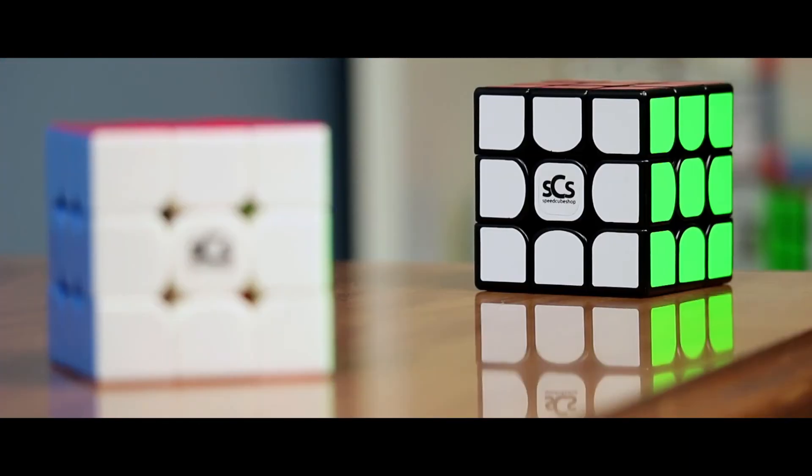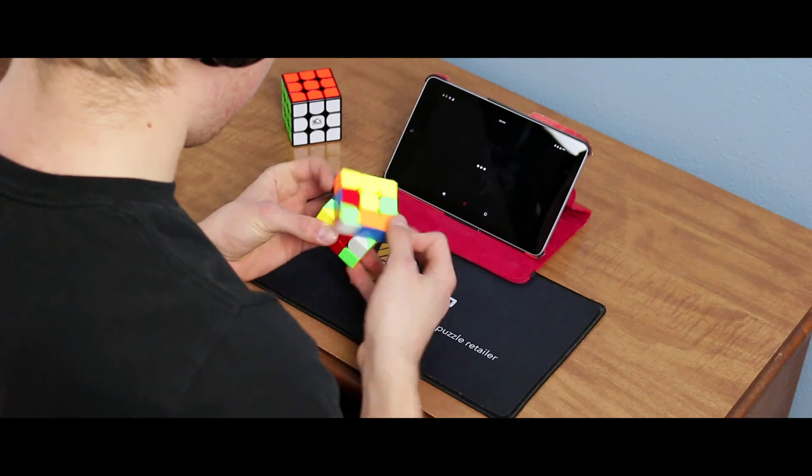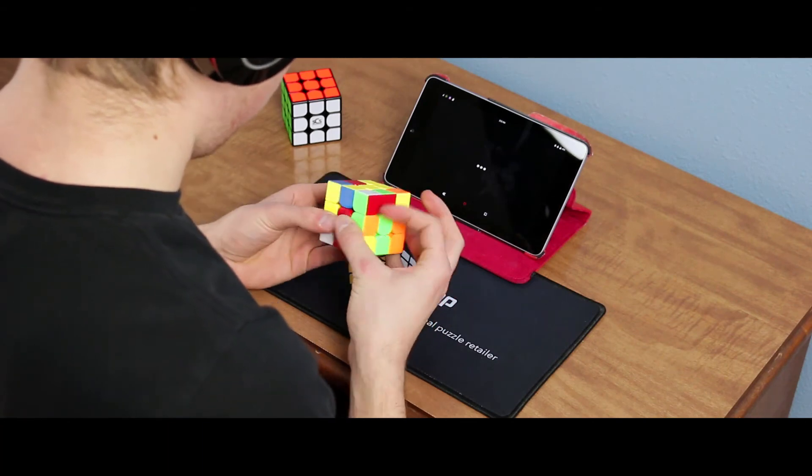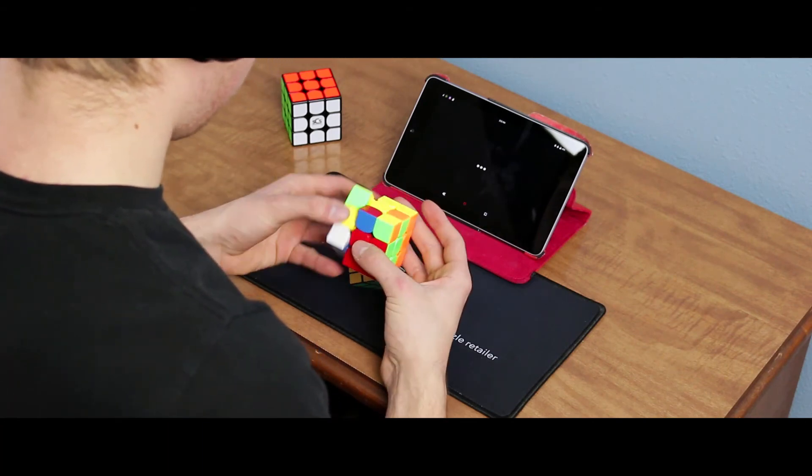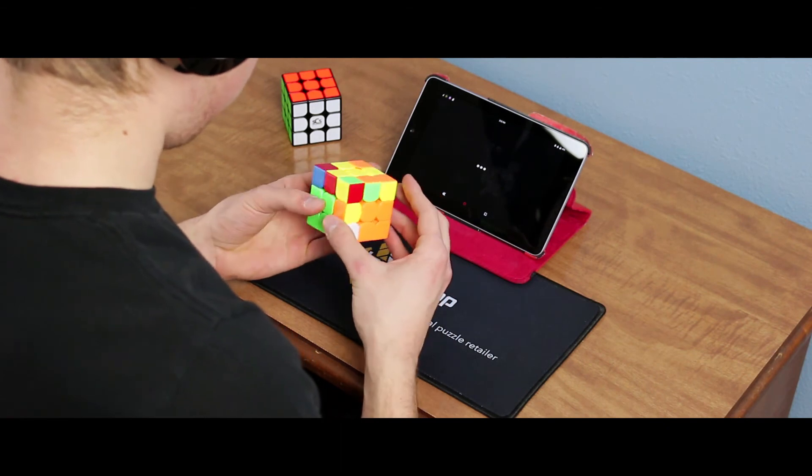The GuoGuan Yuexiao Pro and Pro-M retail for $19.95 and $26.95 respectively on SpeedCubeShop.com, which I think is a great price. The cube has a nice controllable feel when lubed and has strong performance all around. If you'd like to purchase this 3x3, the link will be in the description below.